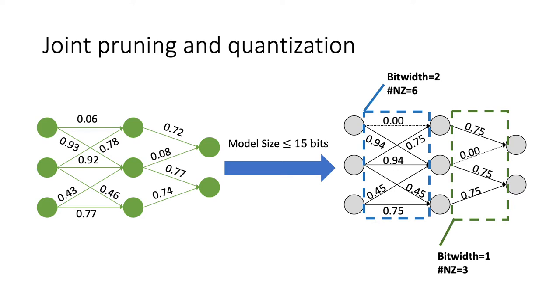We use joint pruning and quantization to compress a DNN with a given model size budget. The bit width and sparsity for different layers are automatically optimized for the given loss function.